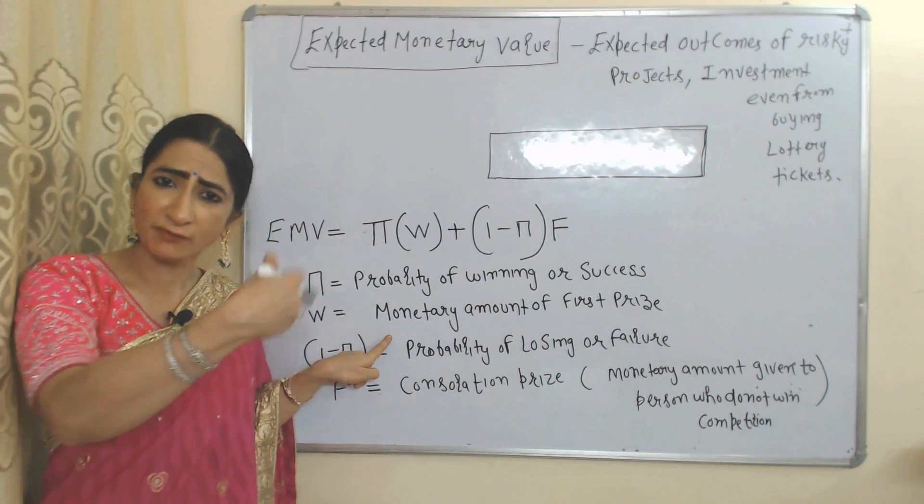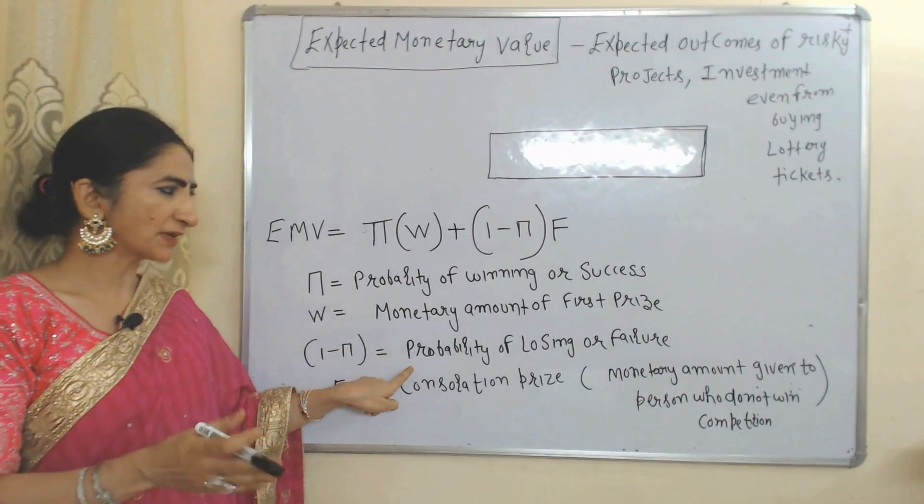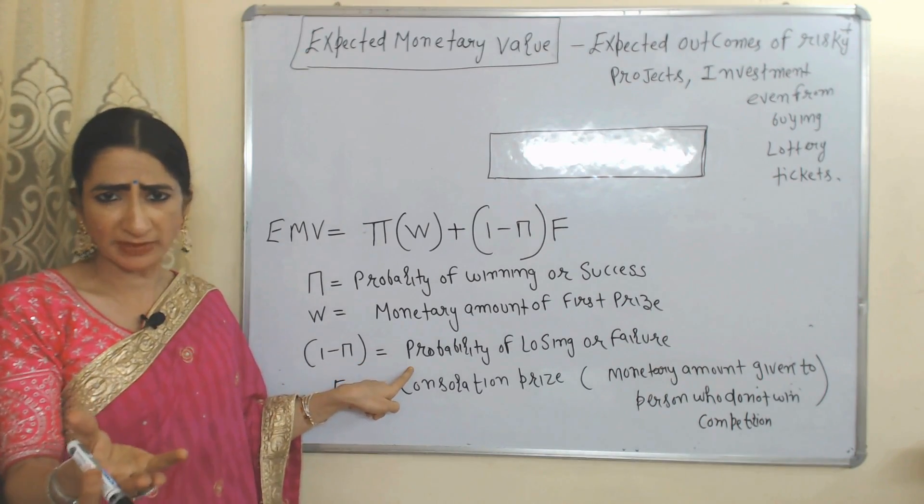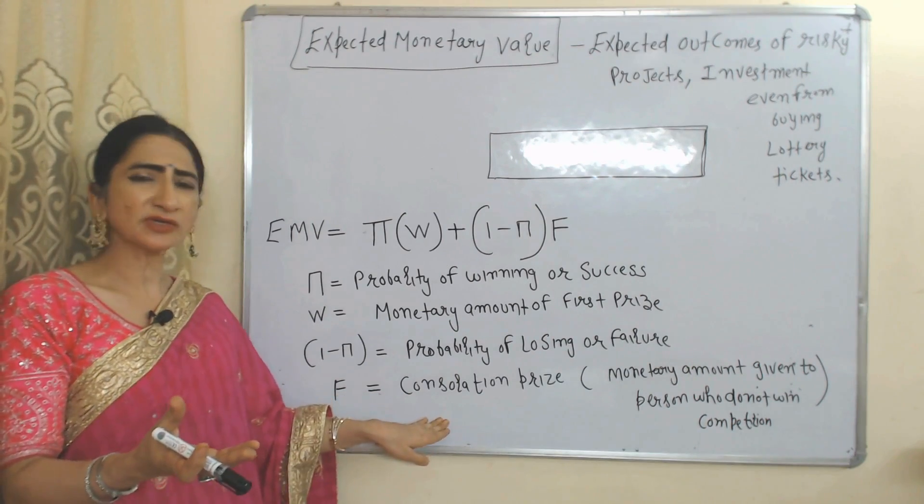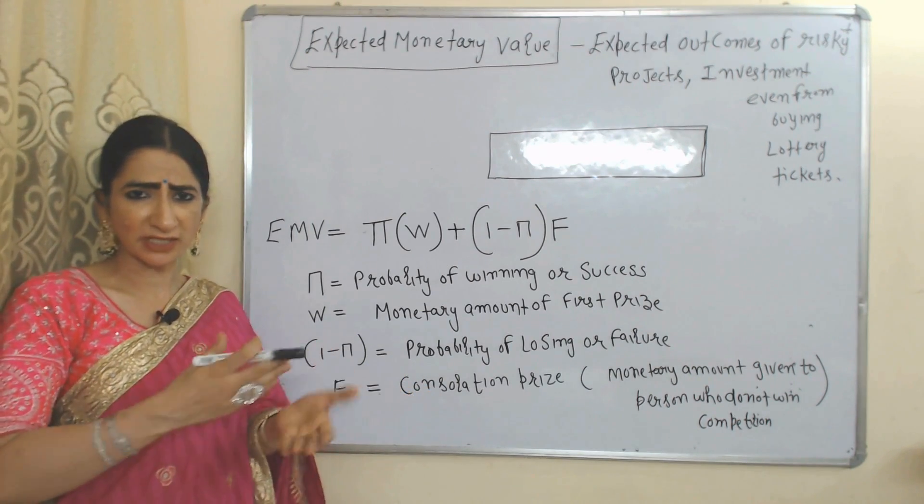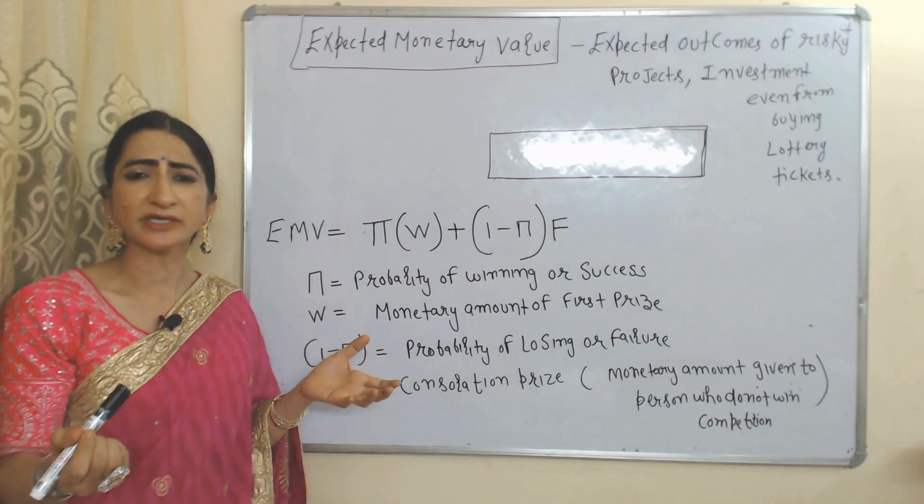One minus pi represents probability of losing or probability of failure. F represents consolation prize. Consolation prize means sometimes we give some amount of money or a small prize to persons who don't win.